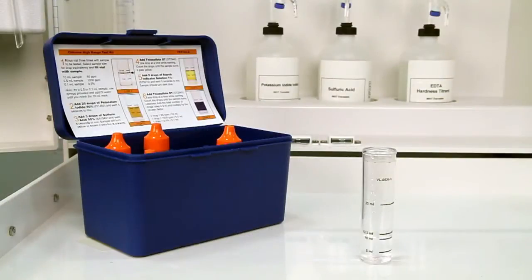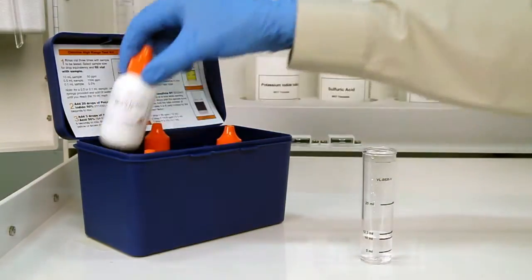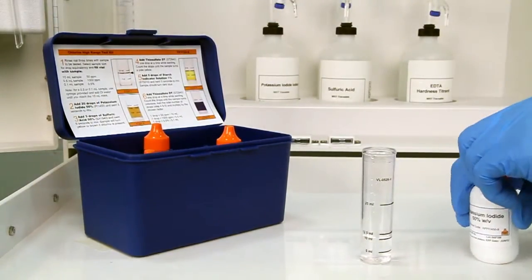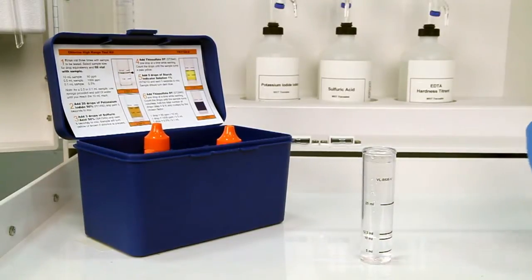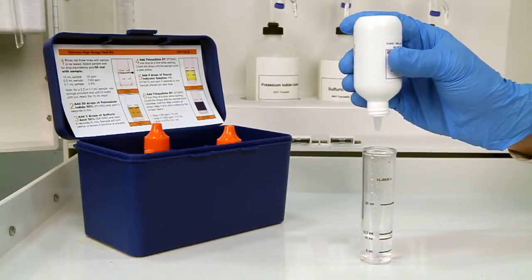Once you have collected an accurate sample, the next step is to add 20 drops of potassium iodide 50%. The bottle contains a dropper tip, so it's important to hold the bottle vertically to get a consistent drop size.